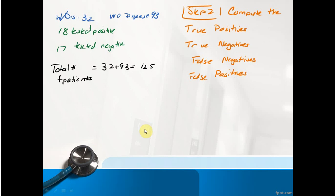And then we calculate something called true positives, true negatives, false negatives, and false positives. This should be 14 here, not 17. The true positives are 18 out of the 32. That means the ones I got right that I said were positive for the disease were 18 out of the 32 that actually had the disease.